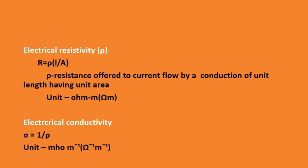Next one is electrical resistivity rho. Electrical resistivity of a material is defined as the resistance offered to current flow by a conductor of unit length having unit area of cross section. We can write R equal to rho·L by A. Here rho is the electrical resistivity, and its unit is ohm·meter.